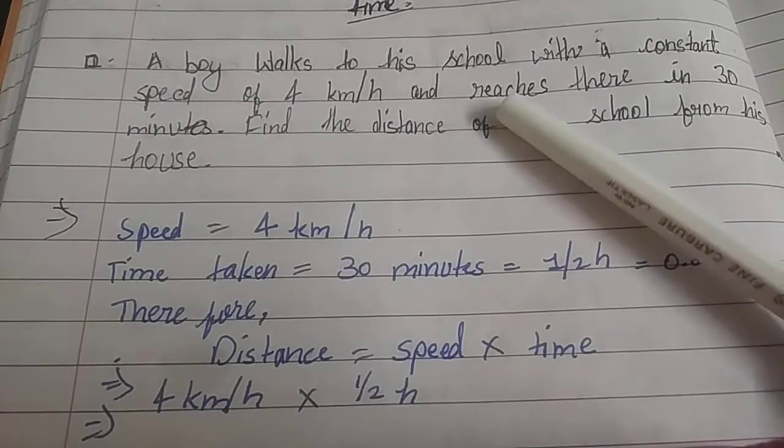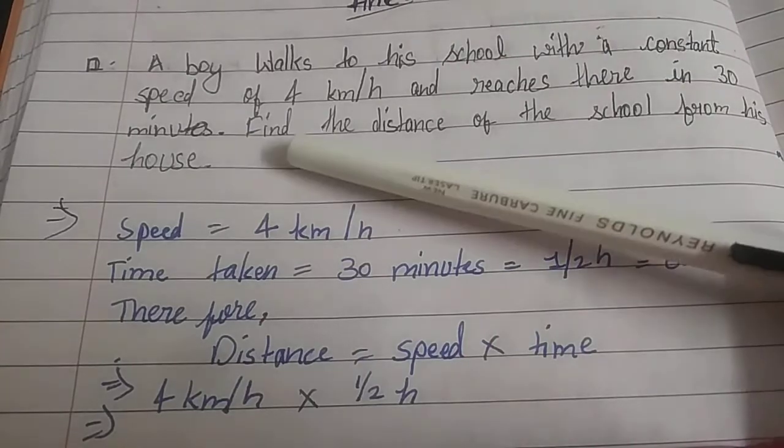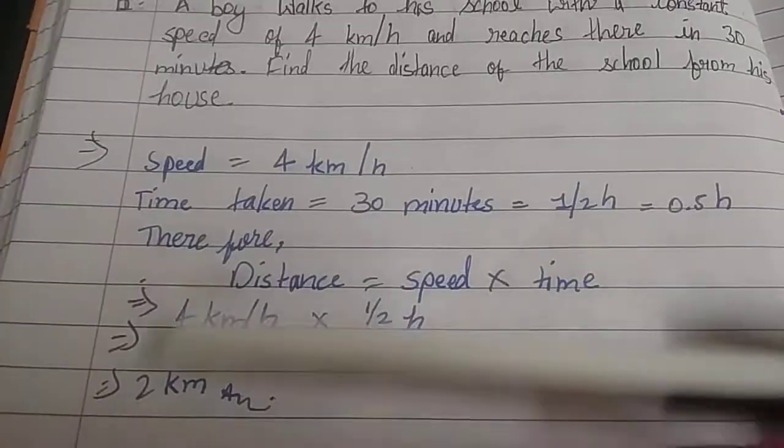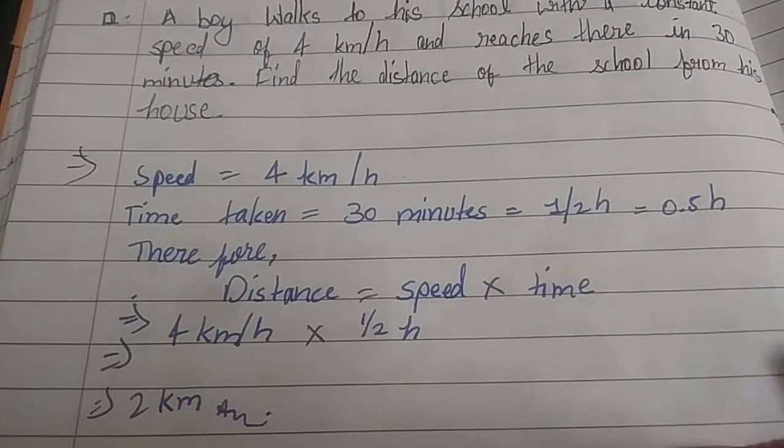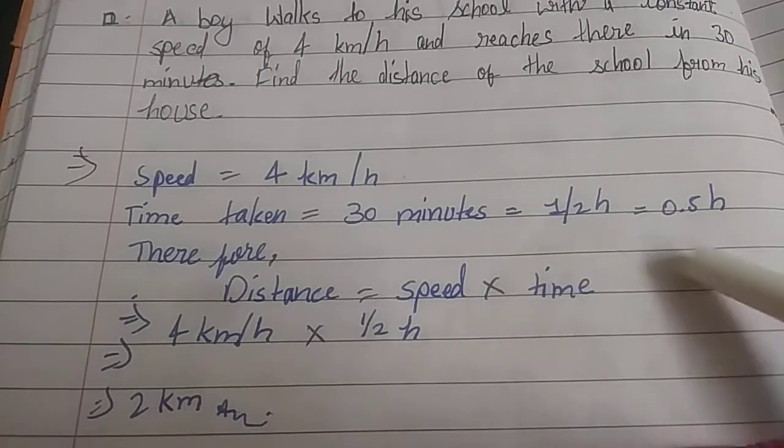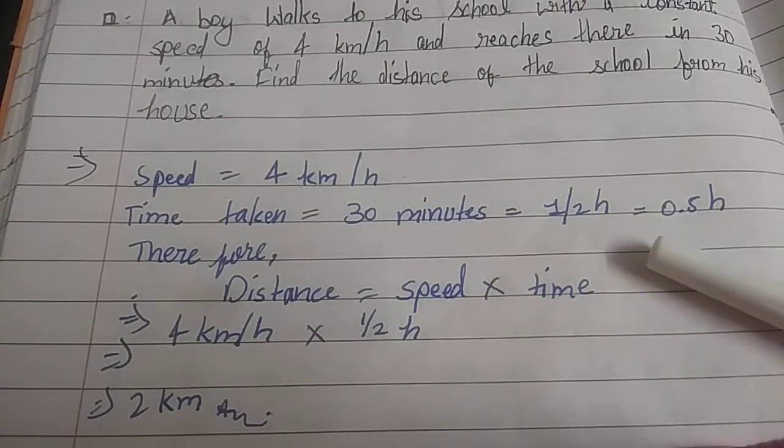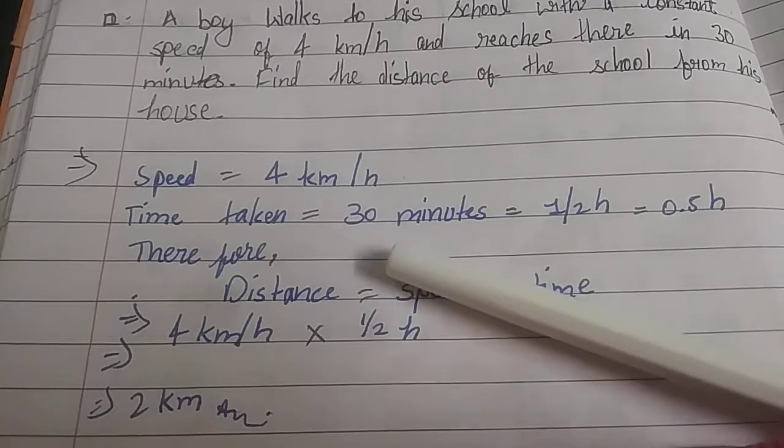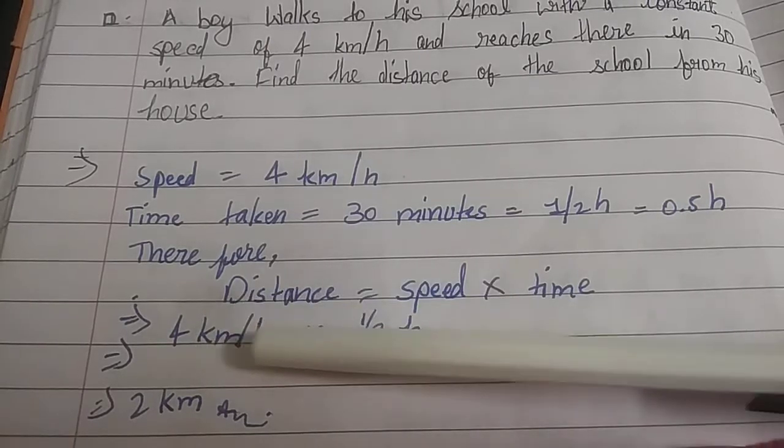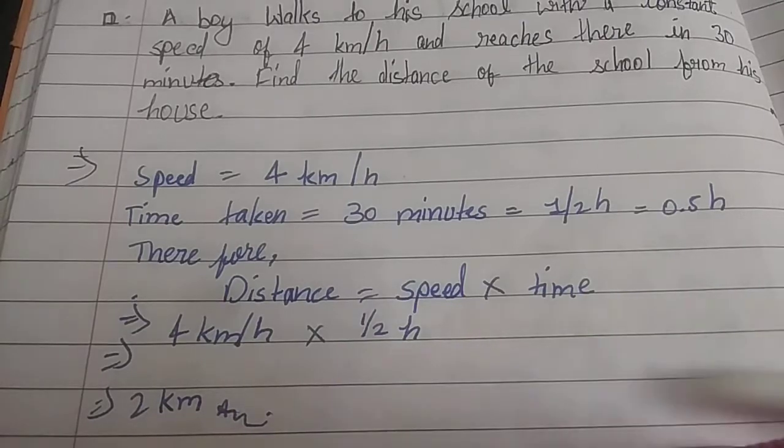Answer: Speed equals 4 kilometers per hour. Time taken equals 30 minutes. We convert 30 minutes into hours, which comes to 1 upon 2, or 0.5 hours. Therefore, distance equals time multiplied by speed: 4 kilometers per hour multiplied by one half hour, so we get 2 kilometers.